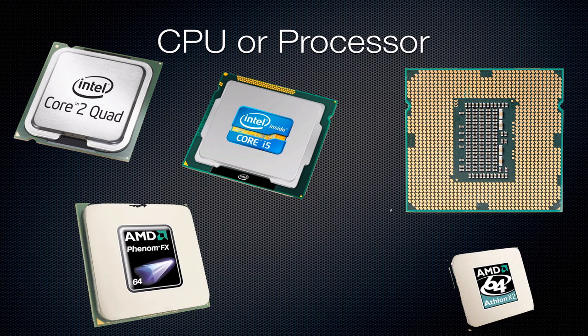The price range for processors — an i3 or i5 you can probably get for around $100. They go all the way up to $500. And if you want the Intel Extreme, that's about $1,000. When installing the processor, make sure you don't bend the little gold pins — the return policy does not accept bent pins. We'll get into all of that when we're building.